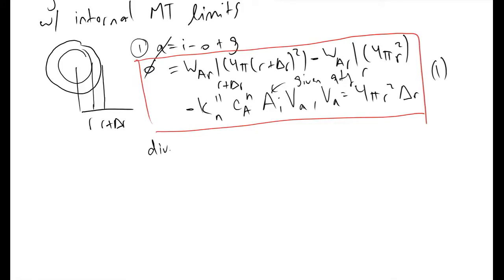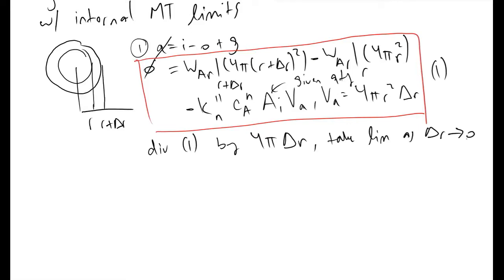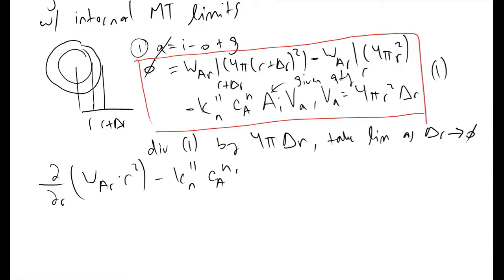The next step is to divide all of equation 1 by 4π·δR and take the limit as δR goes to 0. We note that we have the definition of a derivative in the W_AR flux terms. Doing this, we end up with the derivative with respect to r of the flux of A in the radial direction times r² minus K_n'' times C_A^n times A_i times r², and this must equal 0 because we are at steady state.